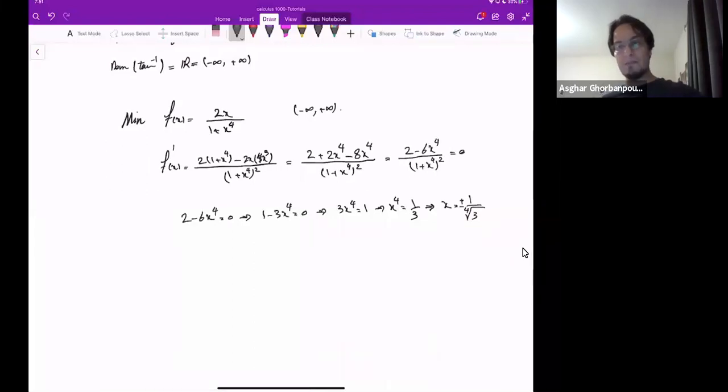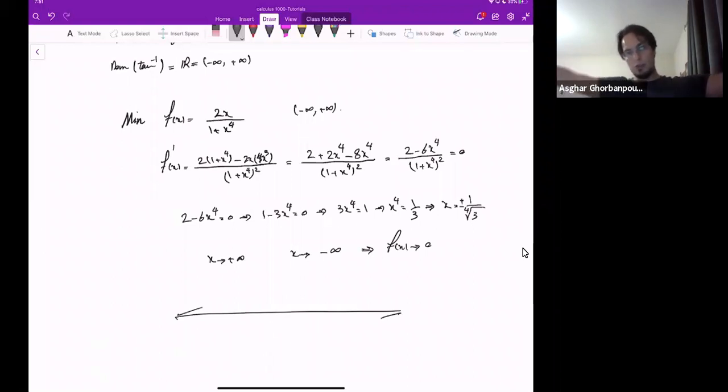Absolute max/min usually we have closed interval and we have endpoints and the things inside, the critical points inside. But now I have open interval from negative infinity to plus infinity. What I know is that as x goes to plus infinity and x goes to minus infinity, the function goes to zero. So my function, wherever it is, at the end is going to come to something like that. At the end, it will go to zero.